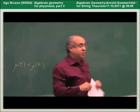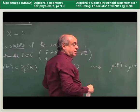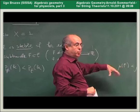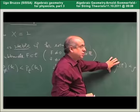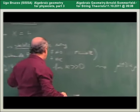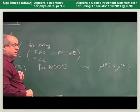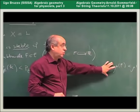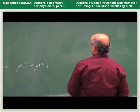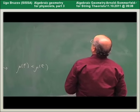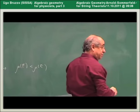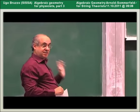What happens in higher dimensions is that the two stability conditions are different. You have the slope stability condition and the Giesecker stability condition, and the slope stability implies Giesecker stability. So this condition is stronger in general, and they differ in higher dimensions. On smooth connected curves, however, the two conditions are the same, so we just talk about slope stability.